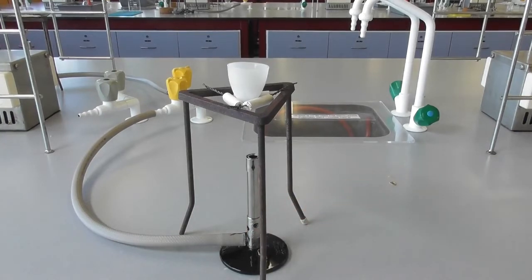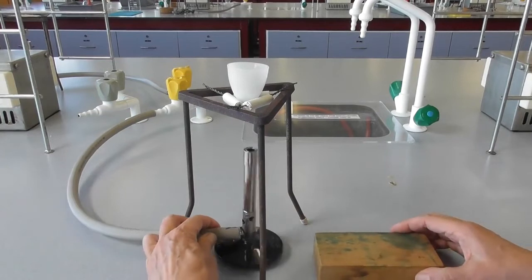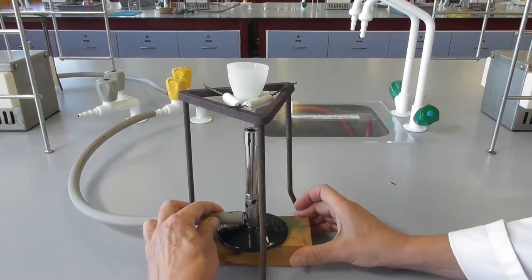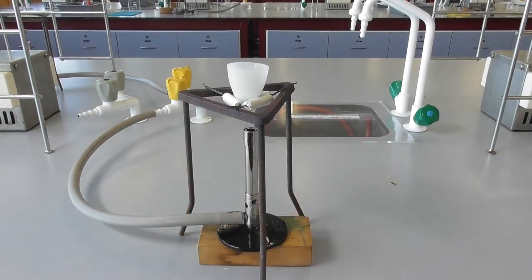If you need a more extreme heat, you can place the Bunsen burner on a small wooden block to bring the hottest part of the flame directly underneath the crucible.